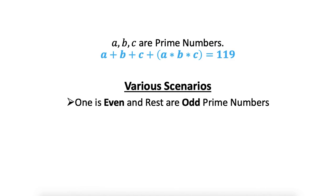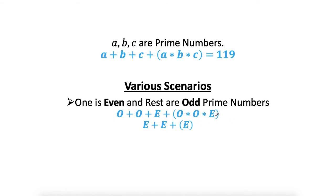Now let's see the third scenario: one even and two odds. That is odd plus odd plus even plus the product of odd times odd times even. Odd plus odd equals even, and since there is one even in the product, the result is also even. Adding all portions together we again get an even result, which is not possible since our answer 119 is odd.